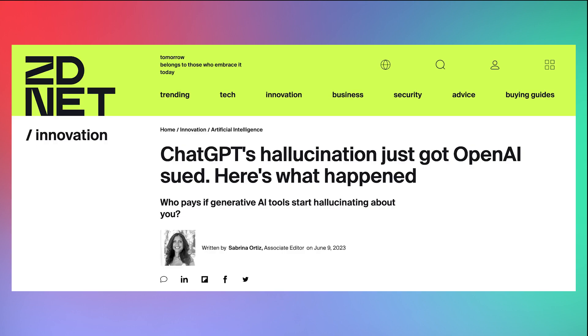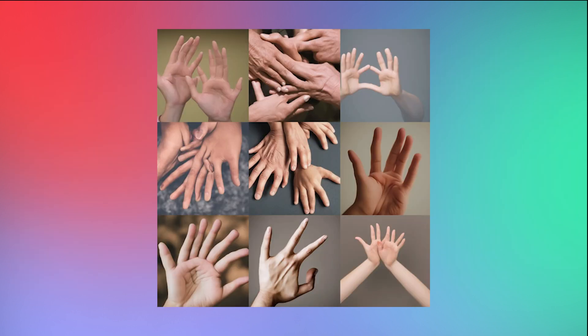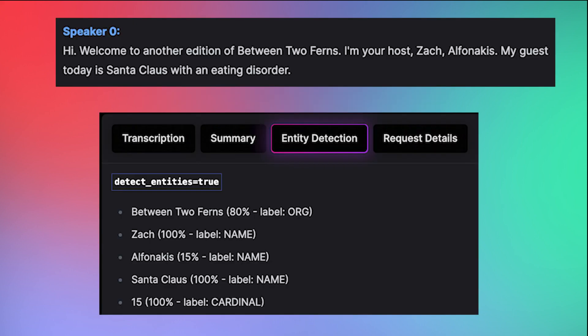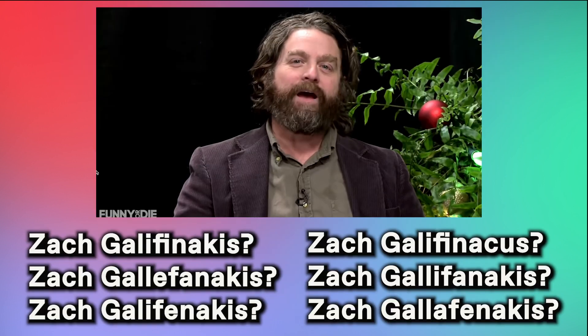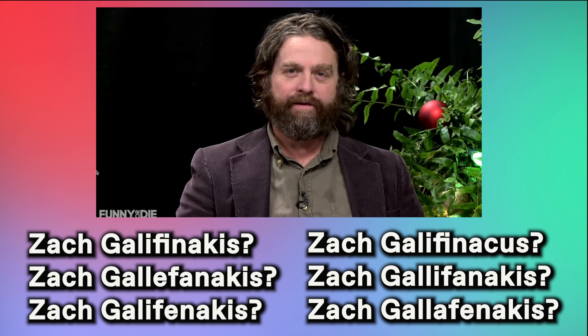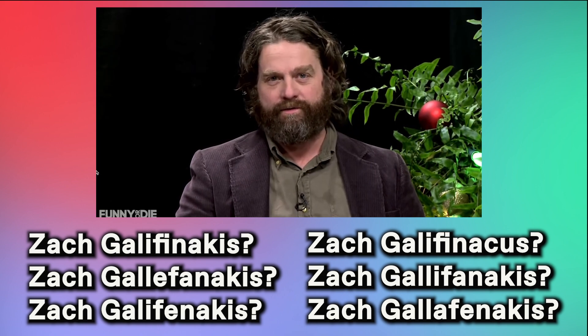Now, it's important to discuss a couple of limitations of these AI models. Much like how ChatGPT hallucinates, or how AI image generators have a tough time with fingers, sometimes transcription models mishear words in the same way that humans do. For example, our model had trouble transcribing Zach Galifianakis' name, as we can see here in the transcription and here in the Entity Detection tab. But I'll give the AI a little bit of leeway, since even most humans can't transcribe Galifianakis' last name upon their first attempt.